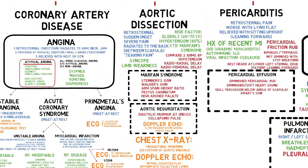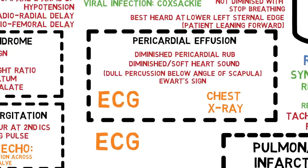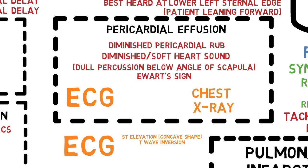For pericarditis, ECG and chest X-ray are helpful. Pericarditis will show ST elevation and T wave inversion, similar to myocardial infarction. To differentiate between the two from an ECG perspective, the ST elevation and T wave inversion in pericarditis tend to be diffuse — manifesting in all leads — and the ST elevation shape is usually downsloping or concave. This ST elevation will also not evolve into Q wave formation. However, pericarditis and myocardial infarction cannot be differentiated based on ECG alone; we must take into account the patient's clinical presentation as well.